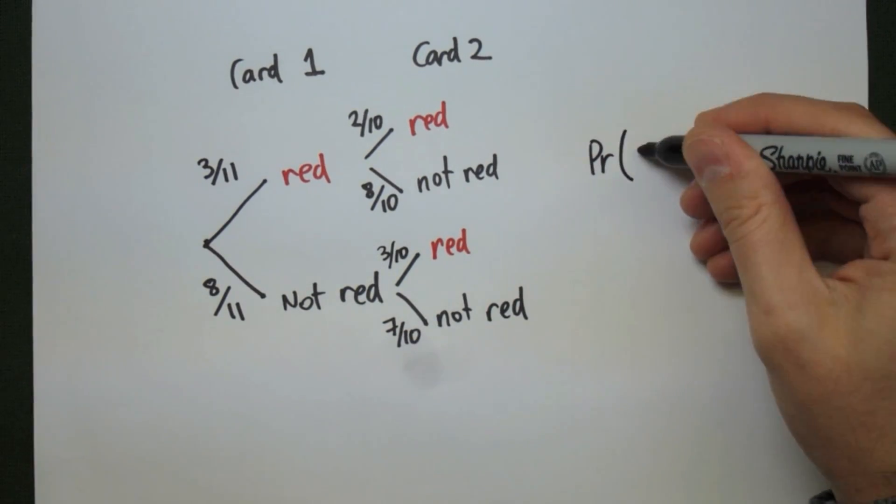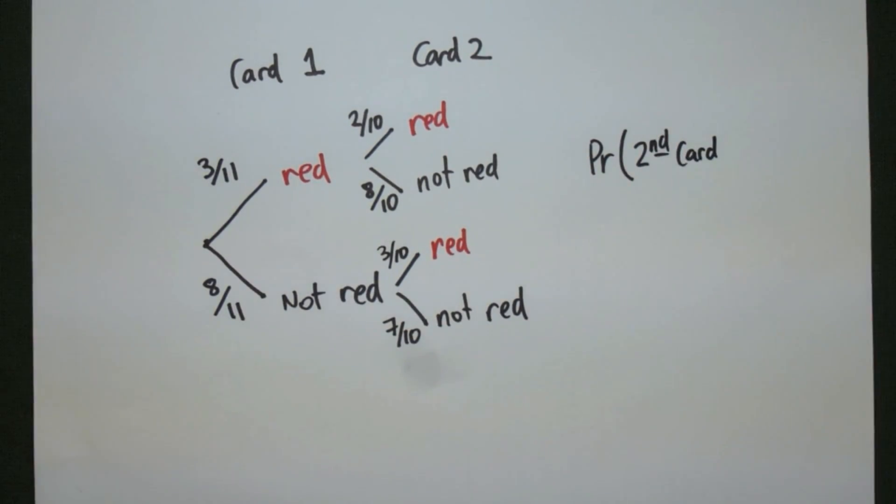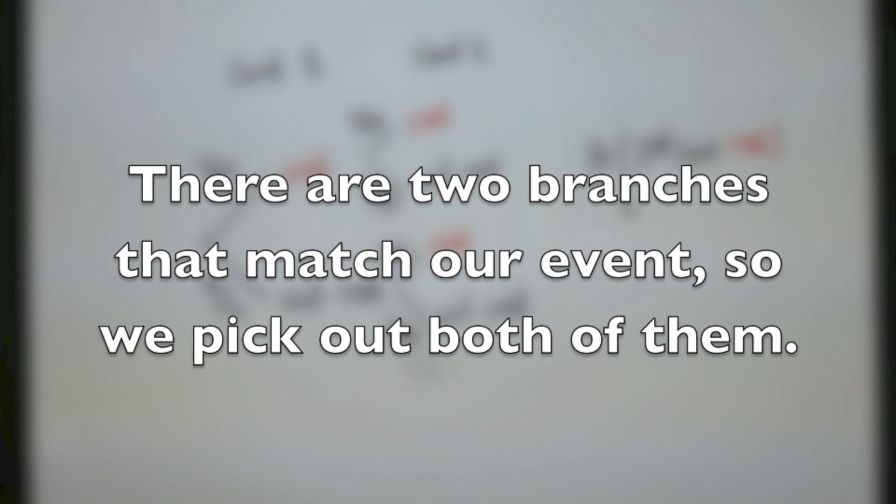Now I want to find the probability that the second card was red. Out of all of these branches, I need to pick out the ones that give me the second card being red. There are two branches that match our event, so we pick out both of them and add the two results together.